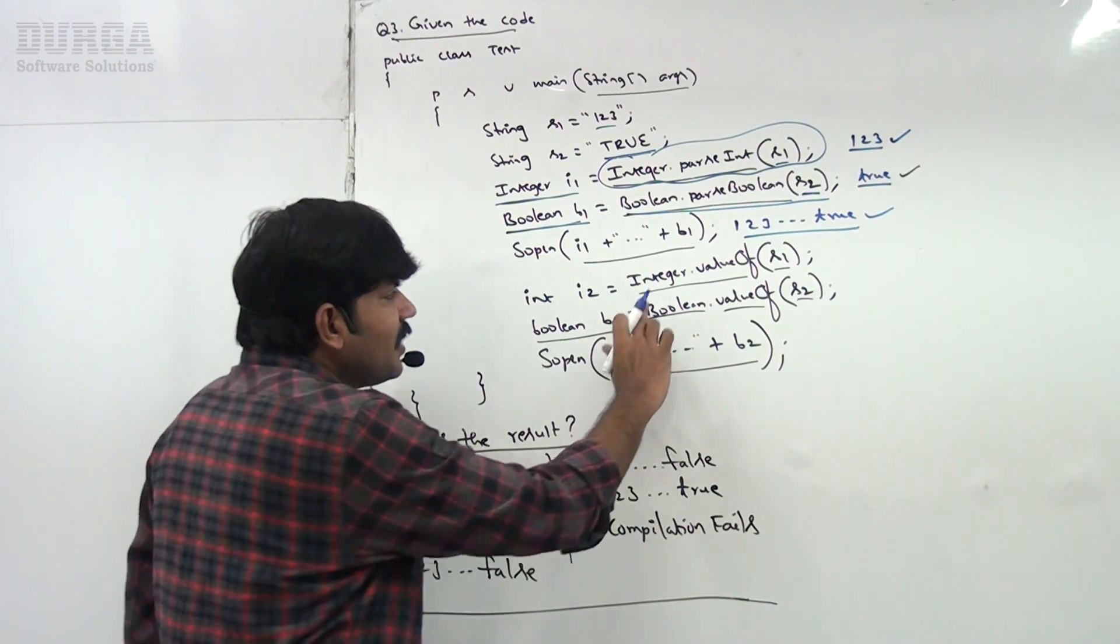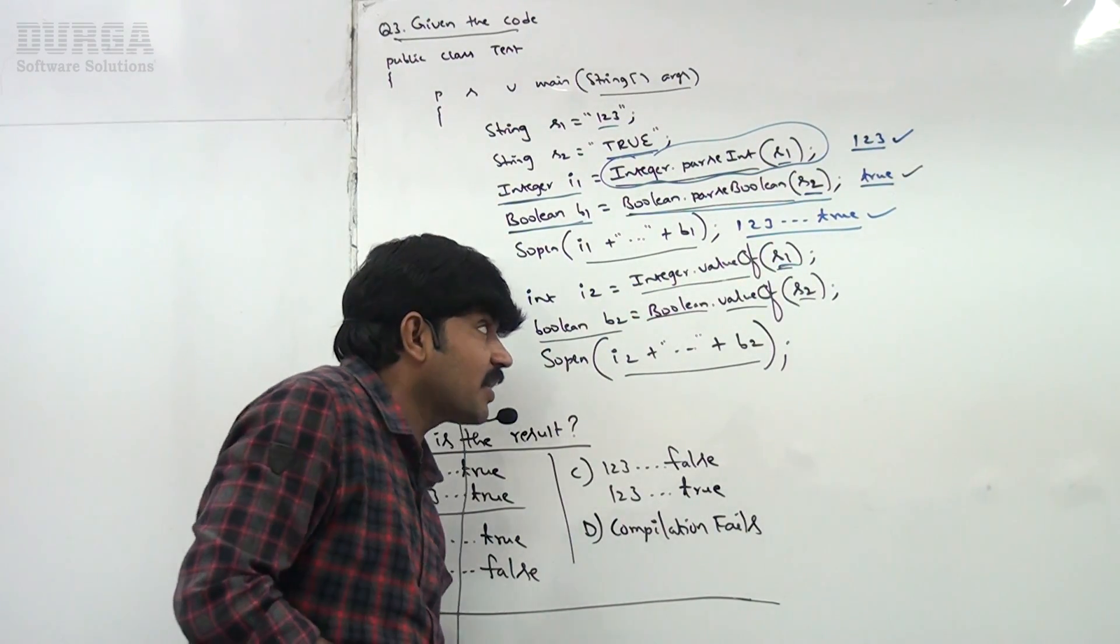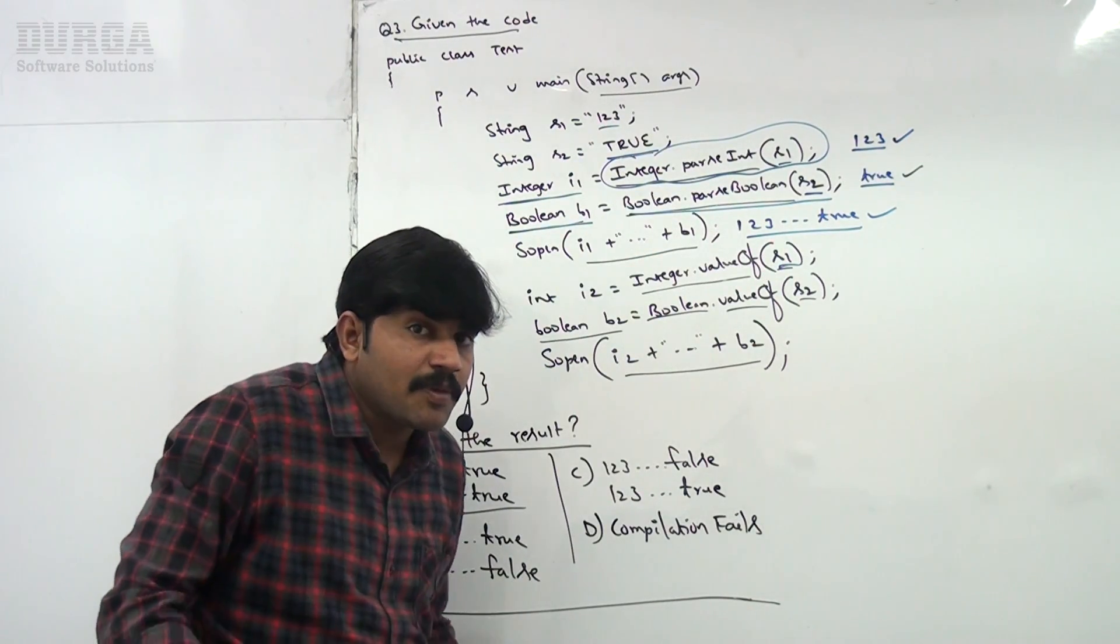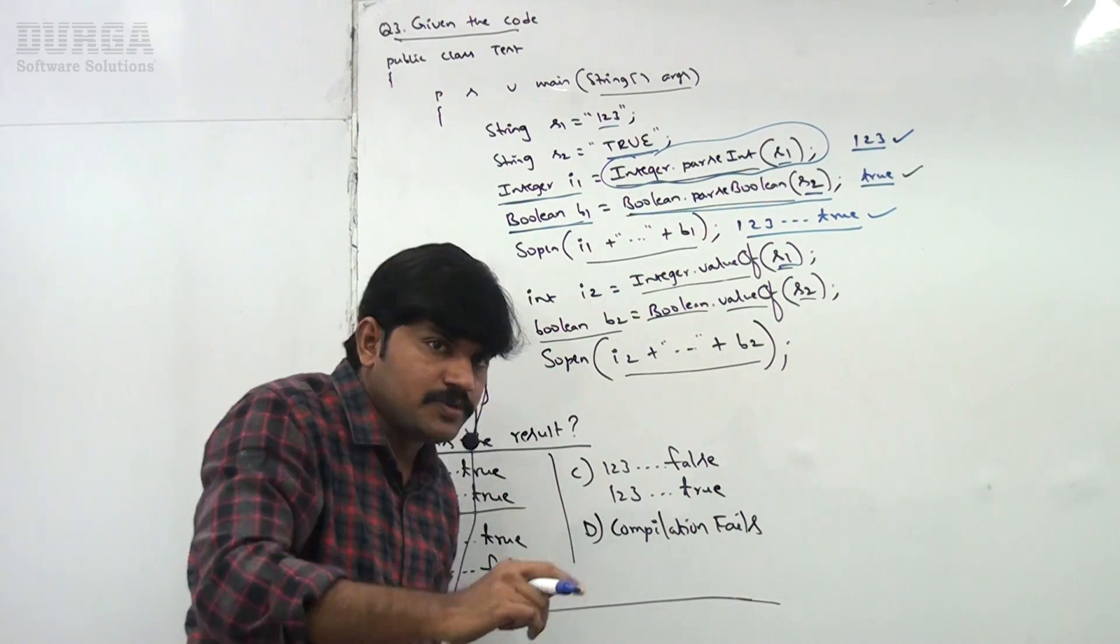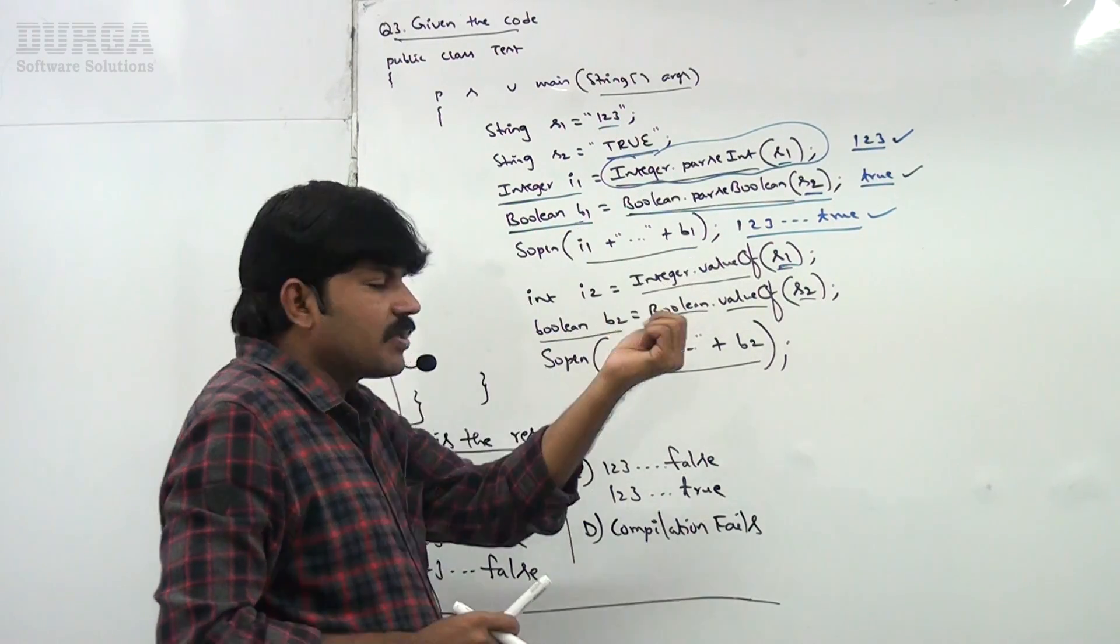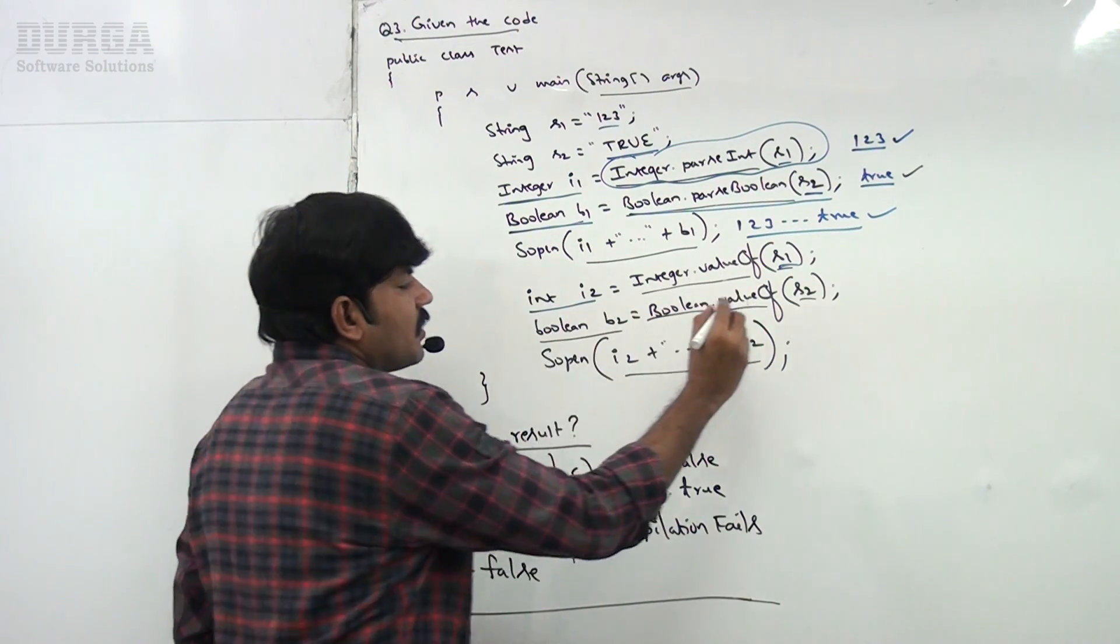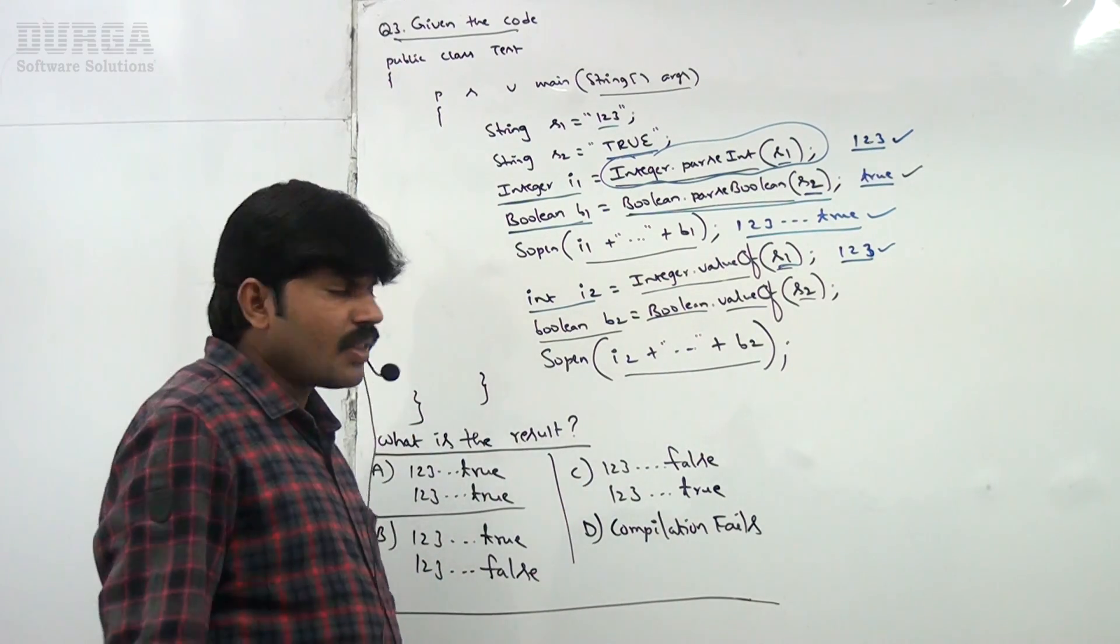Next, Integer.valueOf(s1). Integer.valueOf(s1), s1 means "123" in String style. What is the purpose of valueOf method? To convert String to wrapper object sir. Now 123 Integer object will be created. That Integer object we are assigning to primitive. That's why 123 primitive value will be there. Okay.